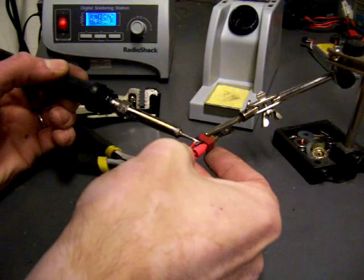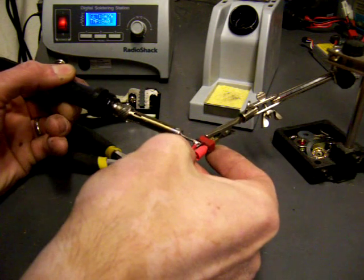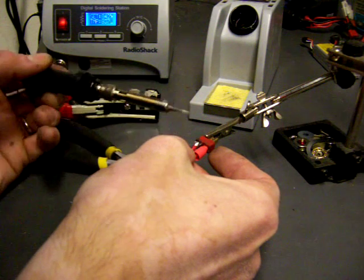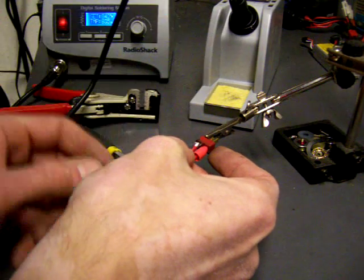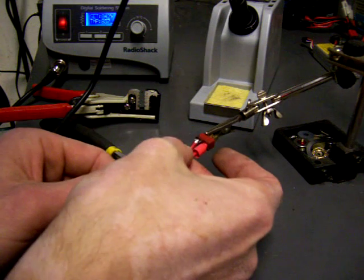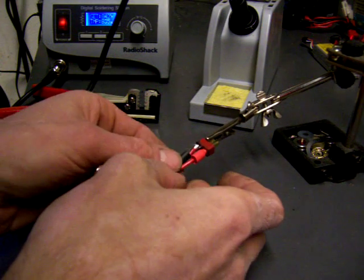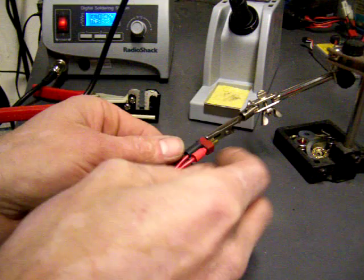Hold it off again and get it melted. There we go, I can see the solder on the Dean's plug turn liquid and there we go. Get my other piece of shrink tubing on.